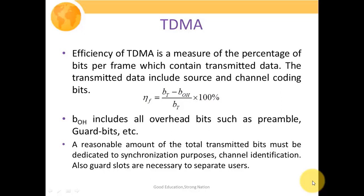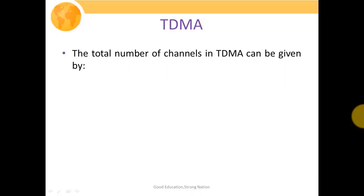A reasonable amount of total transmitted bits must be dedicated to synchronization, channel identification, and guard slots — which are necessary to separate users. These overhead bits are not part of the information but are necessary for effective signal transmission. The total number of channels or users in TDMA is given by: N = m × (BT − 2B_guard) / BC, where m is the total number of TDMA users per radio channel, N is the number of users or channels, BT is the total bandwidth, BC is the channel bandwidth, and B_guard is the guard band.